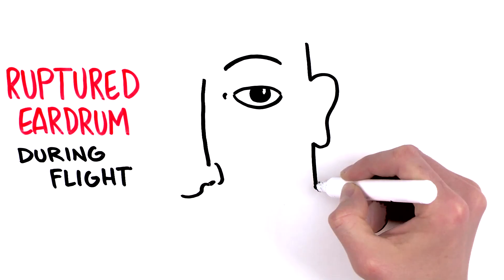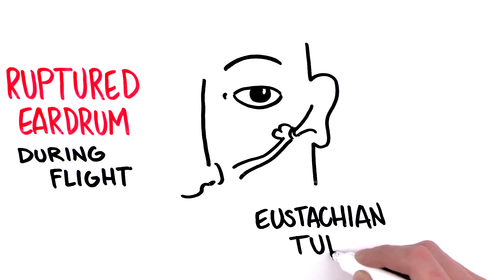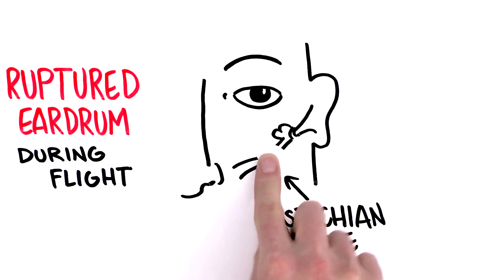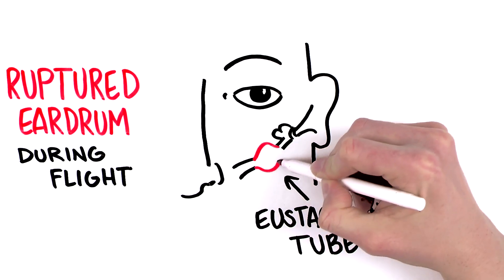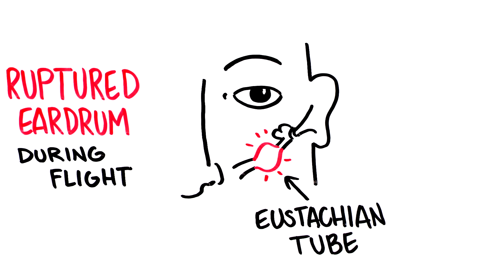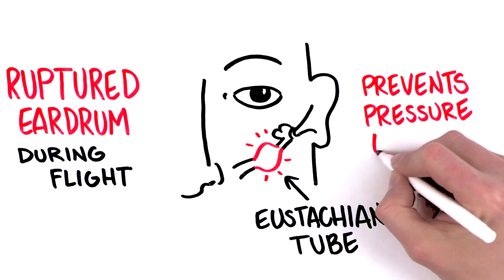When you suffer from a cold, the mucosa in the eustachian tube, which connects your middle ear to your surrounding environment, can swell and block the tube. This condition reduces or even prevents pressure equalization.